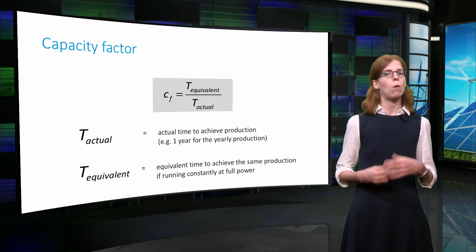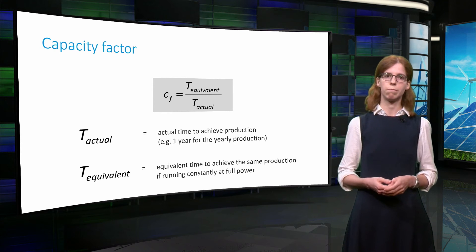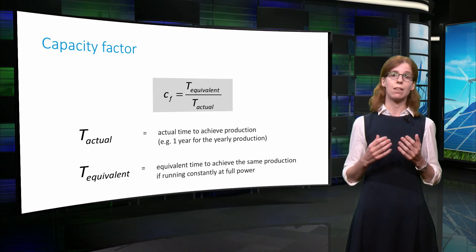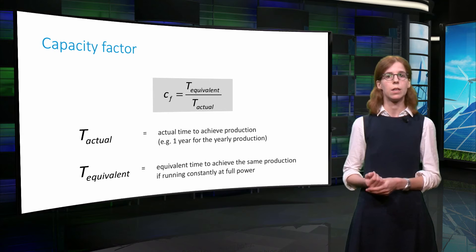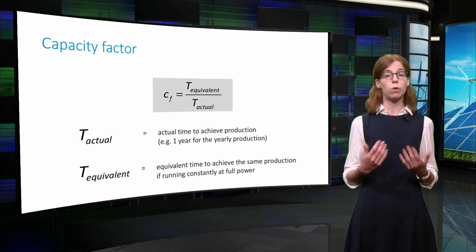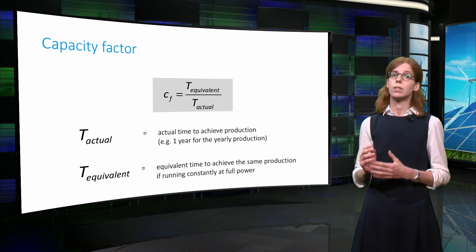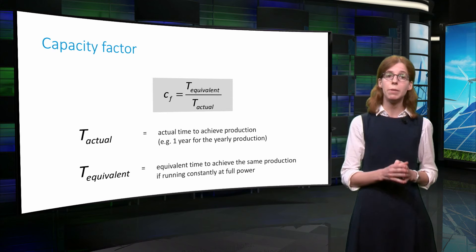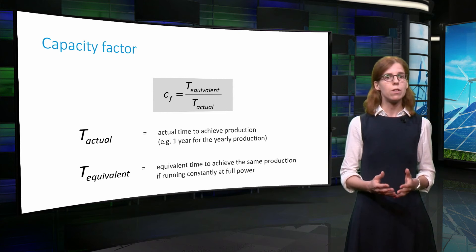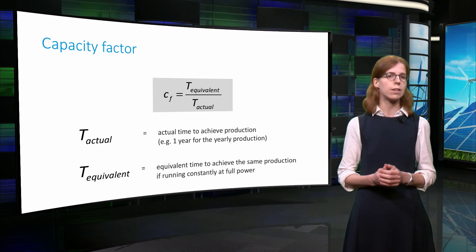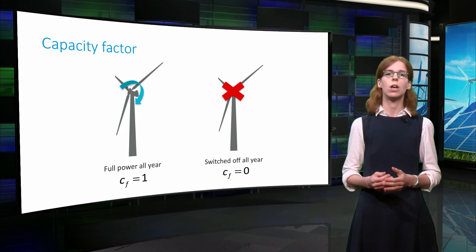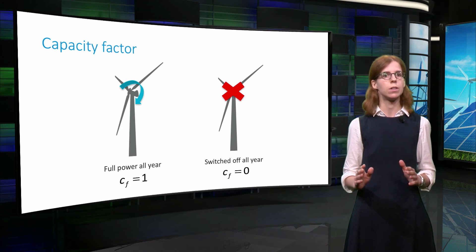Before concluding this video, I would like to talk about an important concept used in energy production — the capacity factor. The capacity factor indicates the percentage of time a system runs at full power over a reference period of time. In this formula, the actual time is the reference time to achieve the given production — for example, one year, if we are considering the yearly production. The equivalent, on the other hand, is the time needed to achieve the same yearly production if the wind turbine was running all the time at full power. By definition, the equivalent is always smaller than the actual, so that the capacity factor is always smaller than unity. In the ideal case of a wind turbine running all year at full power without interruption, the capacity factor equals 1.